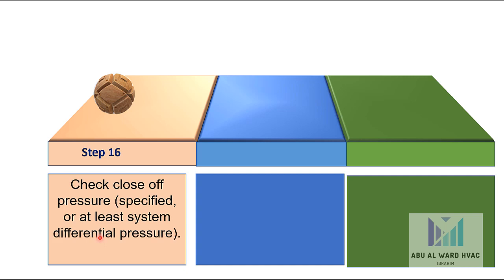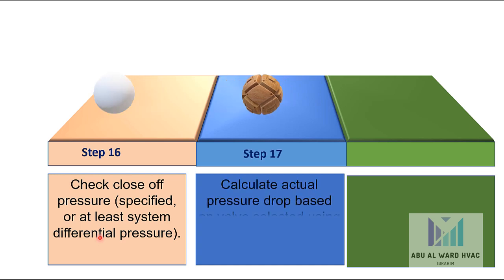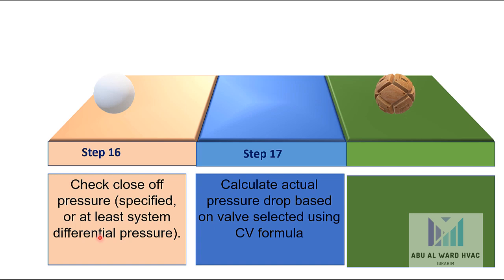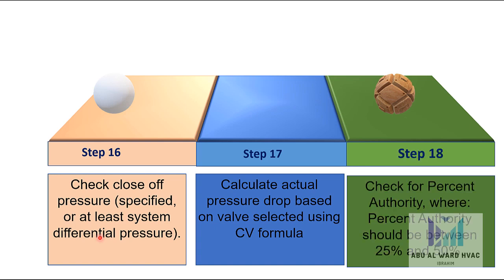Step 14: Determine if manual override is required. Step 15: Based on all of these inputs, select an orderable valve assembly. Step 16: Check close-off pressure — specified or at least system differential pressure. Step 17: Calculate actual pressure drop based on the valve selected using the Cv formula. Step 18: Check percent authority — it should be between 25% and 50%.